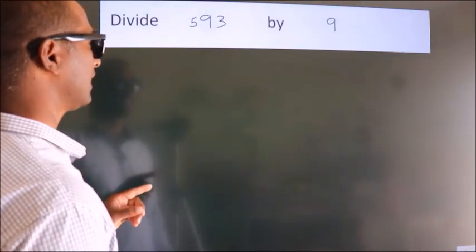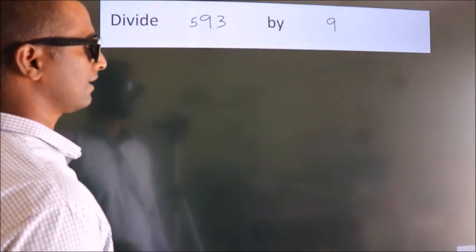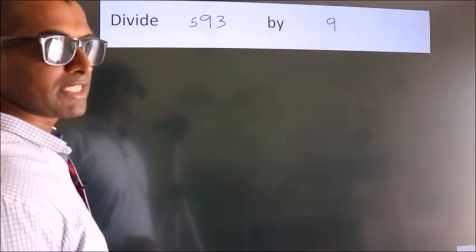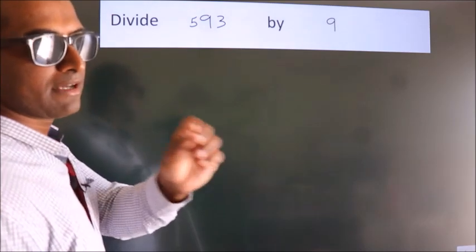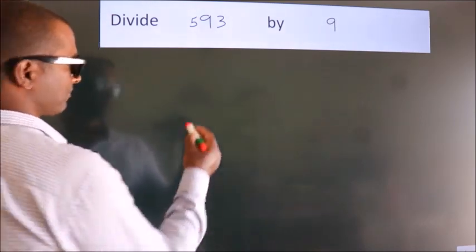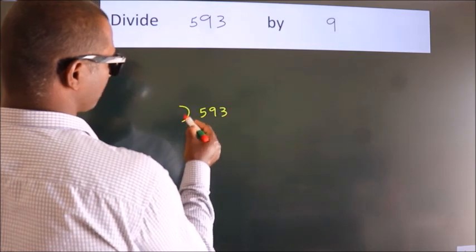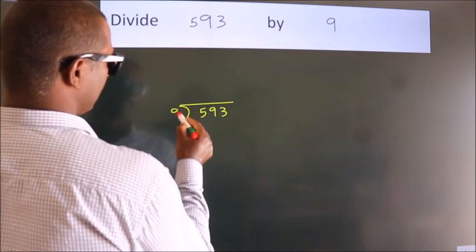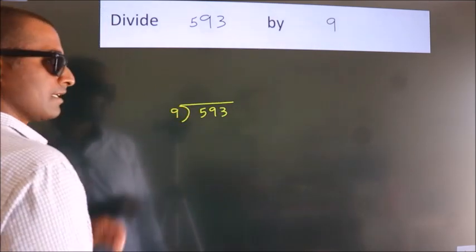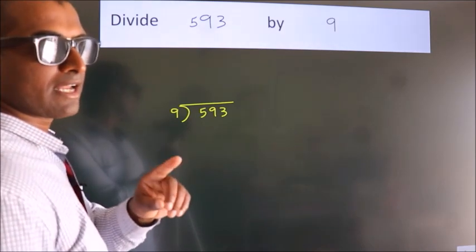Divide 593 by 9. To do this division, we should frame it in this way: 593 here, 9 here. This is your step 1.